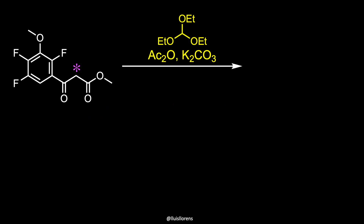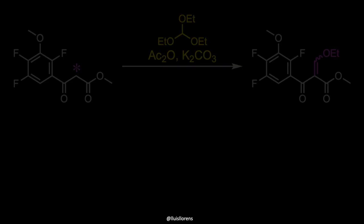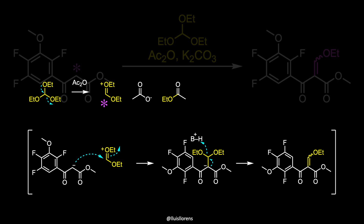The fluoroquinolone core was constructed from this acetoacetate. Condensation with triethylorthoformate in the presence of acetic anhydride and potassium carbonate gave the depicted product. A plausible mechanism involves the formation of active species by reaction between triethylorthoformate and acetic anhydride. Then, the acidic proton of the keto ester can be abstracted by a mild base such as potassium carbonate, generating this enolate. The enolate can then attack this electrophile to generate this intermediate, and elimination of ethanol generates an ethoxymethylene product.